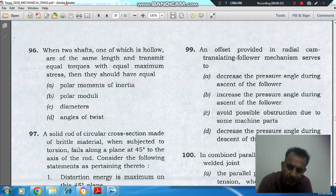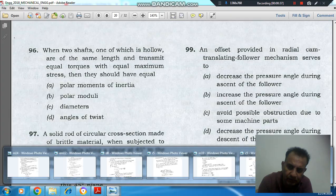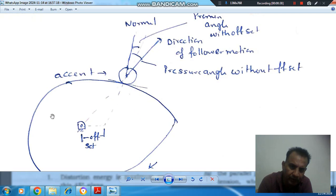Option D: decrease the pressure angle during descent of the follower. So this is the cam and follower mechanism - this is your ascent and this is descent.